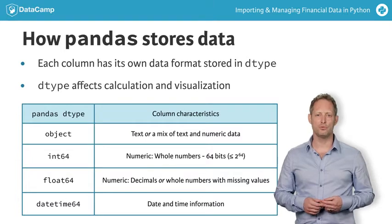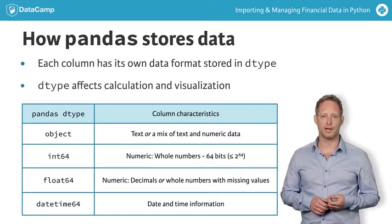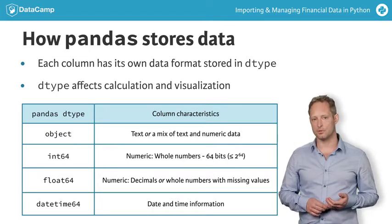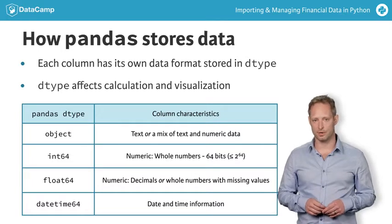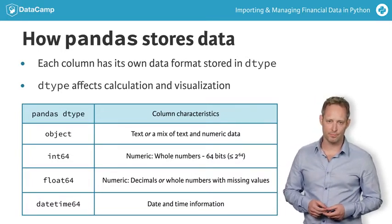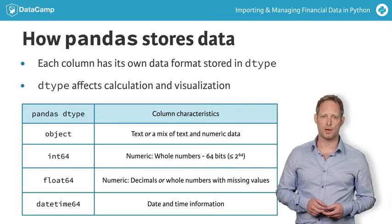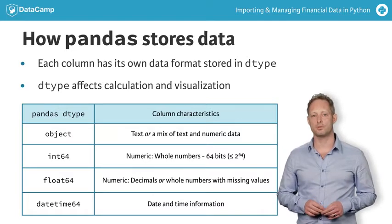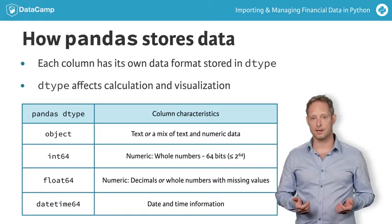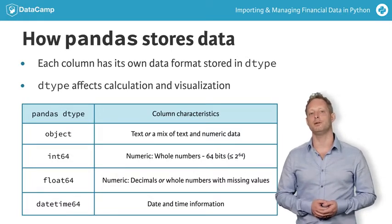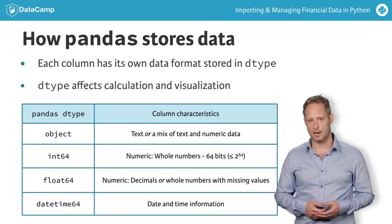There are also two numeric data types. Int64 is for columns containing whole numbers, represented using 64 bits, which means that the largest number can be 2 to the power of 64. Float64 is the second numeric data type, reserved for columns containing either decimals, or whole numbers with some missing values. Lastly, the datetime64 dtype is for columns with date and time information.